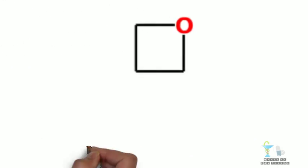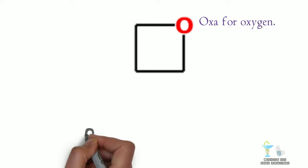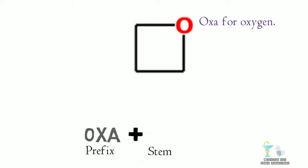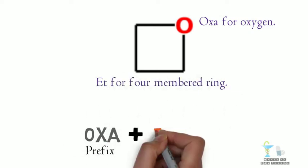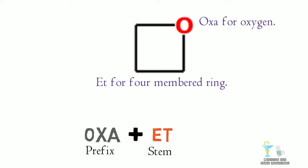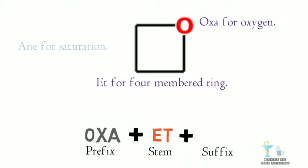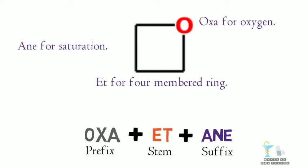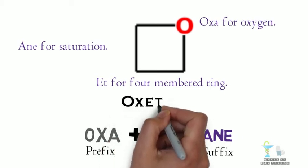Now let us look for four-membered ring. OXA for oxygen, ET for four-membered ring, ANE for saturation. OXA plus ET plus ANE. Removing A we get OXETANE.